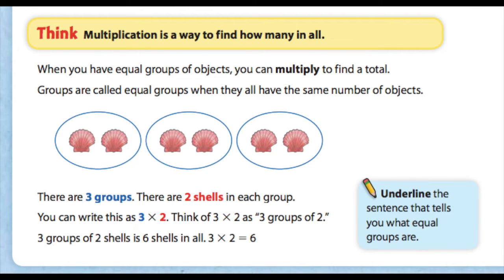Think: multiplication is a way to find how many in all when you have equal groups of objects. You can multiply to find a total. Multiply is a bold word, so it must be important. Groups are called equal groups when they all have the same number of objects.